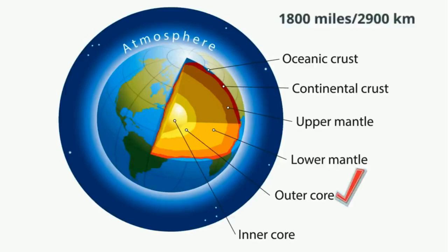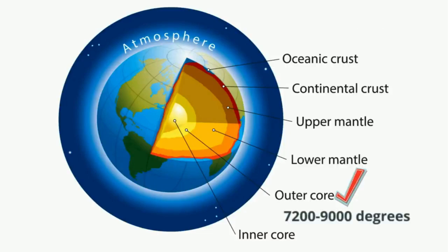The outer core is composed mostly of iron and nickel with metals found in liquid form. The outer core reaches temperatures of 7,200 to 9,000 degrees Fahrenheit and it's estimated to be about 1,400 miles thick or 2,300 kilometers.